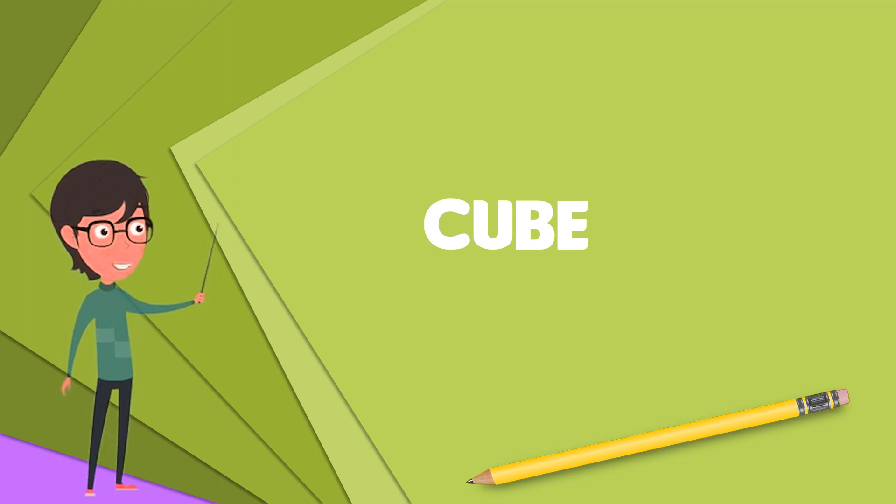The cube is also a square parallelepiped, an equilateral cuboid, and a right rhombohedron. It is a regular square prism in three orientations and a trigonal trapezohedron in four orientations.